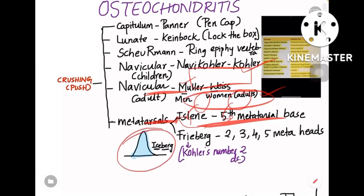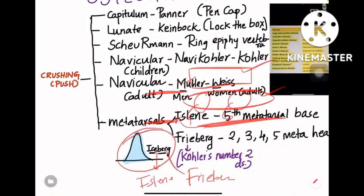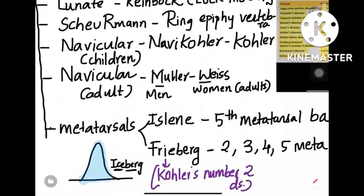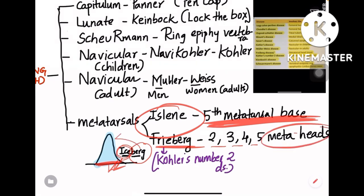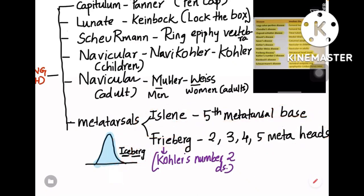For metatarsal involvement there are two names. Think of an iceberg: 'ice' resembles Iselin and 'berg' is Freiberg. Iselin disease is the fifth metatarsal base — the base of the iceberg. Freiberg disease is for the second, third, and fourth metatarsal heads — the tip of the iceberg. Most commonly, Freiberg refers to the second metatarsal head.